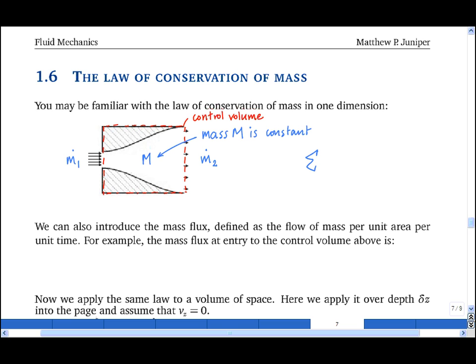This can be written as the sum over all the inlets and outlets of mi, the mass flow rate in or out, is equal to zero if dm by dt, the mass inside the control volume's change with time, is equal to zero.